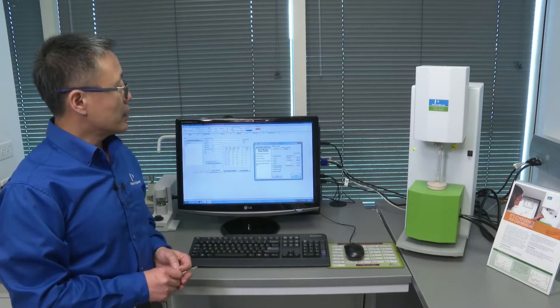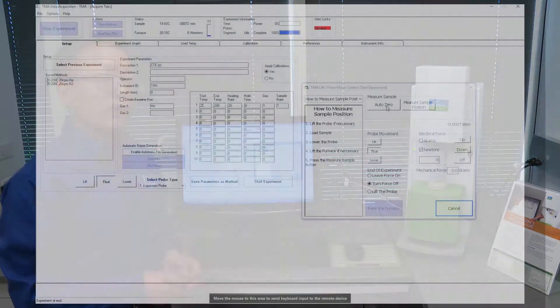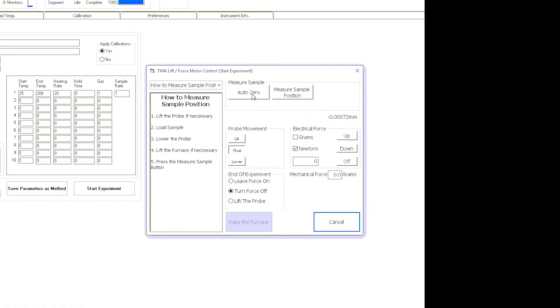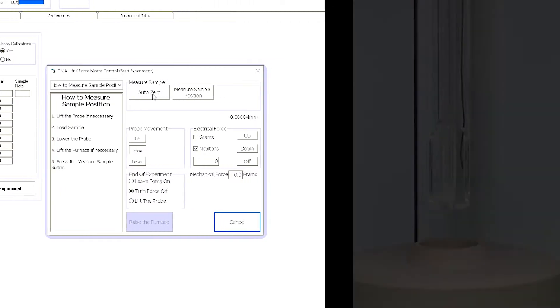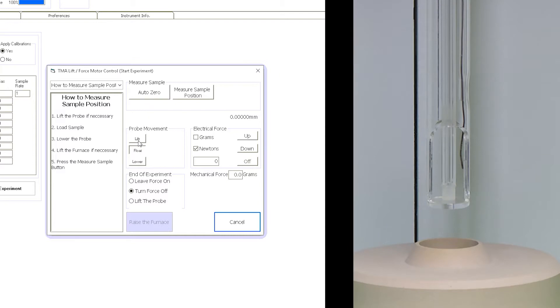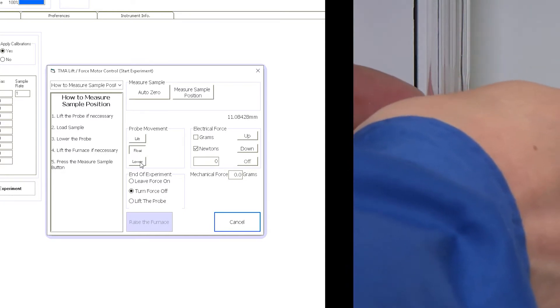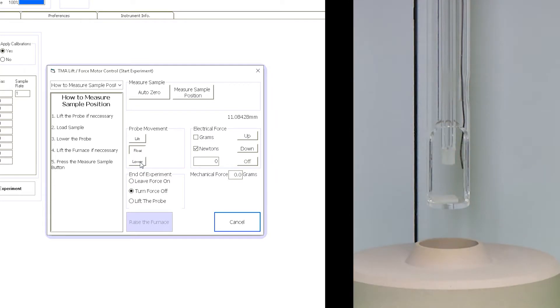The first thing you want to do is lower the probe and tare the probe position. You click the Auto Zero button to measure the original position. And when it's stabilized, you want to lift the probe and put the sample on the platform right under the probe. Then you can lower the probe and the sample thickness will be recorded.